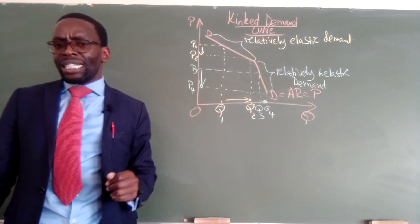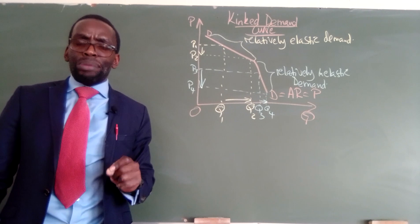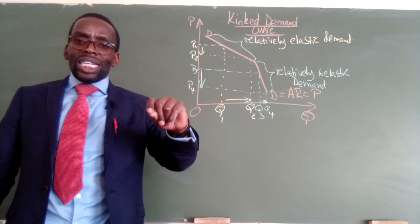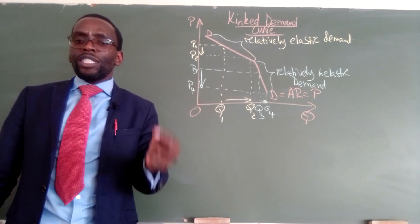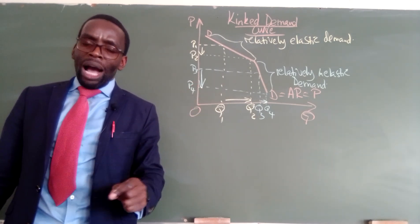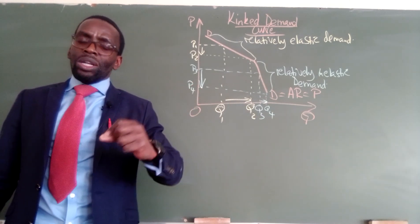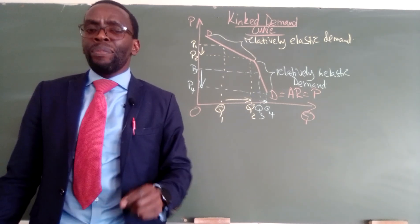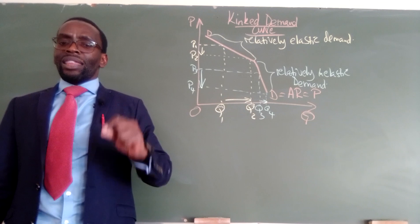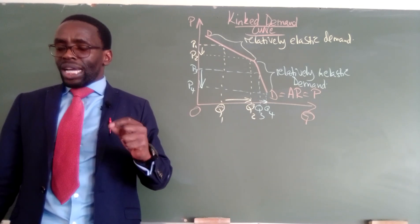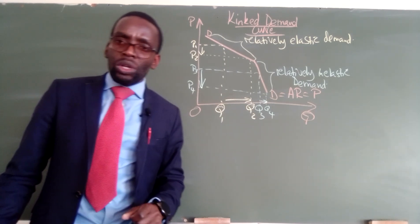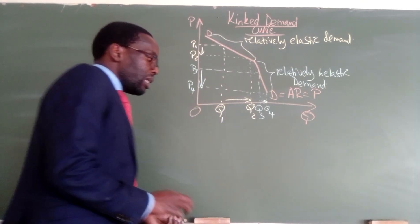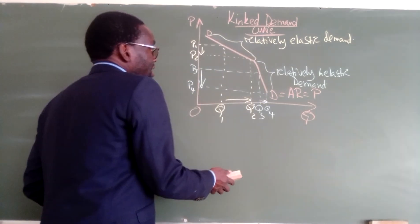In an imperfect market, every time there is an imperfect market, you would understand that your marginal revenue is going to be lower than your average revenue. The additional income is going to be lower than the average revenue you are going to make from that particular product.